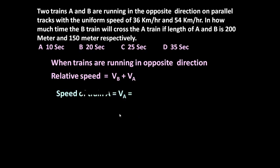Now let us determine VA and VB. VA, the speed of train A, is equal to 36 into 5 by 18 to convert kilometers into meters per second. 36 into 5 by 18 is equal to 10 meters per second.